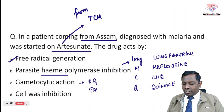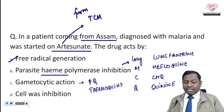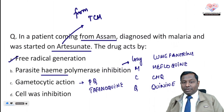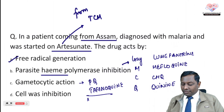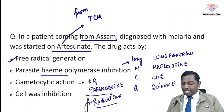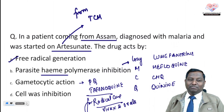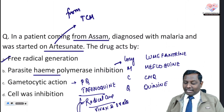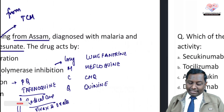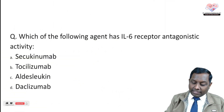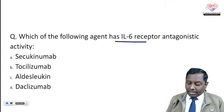Gametocytic drugs are primaquine and tafenoquine. These are mainly utilized for radical cure. Radical cure is again an exam topic — it is required in P. vivax and P. ovale malaria. You have seen multiple important information from this slide.